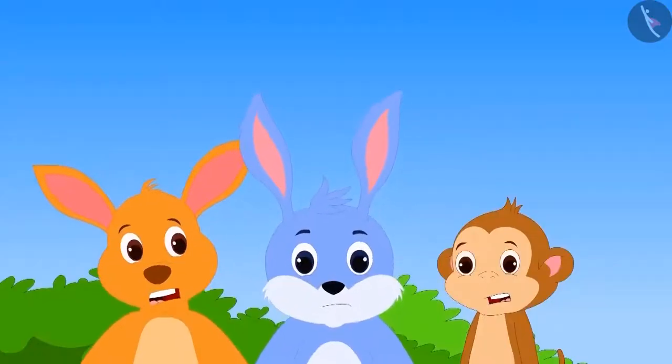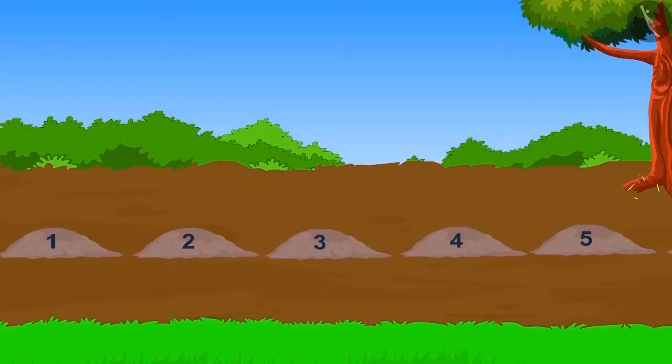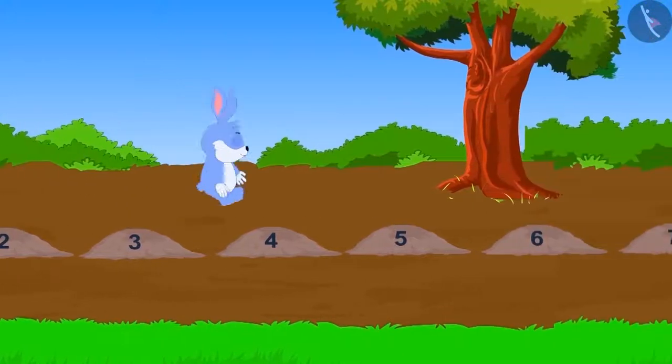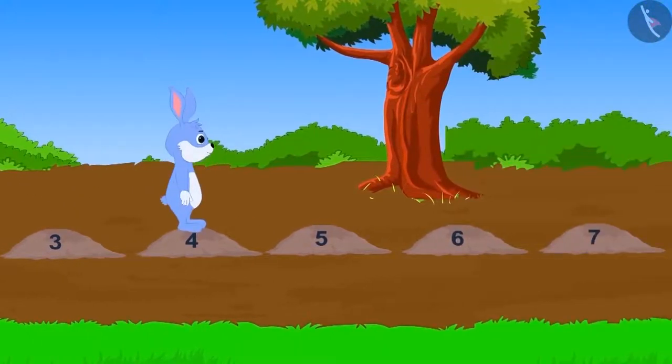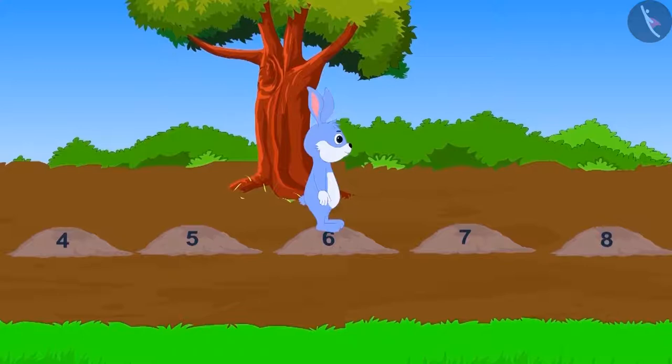First, bunny tried to cross the swamp. He jumped two steps in one jump and reached the second stone. Then he took another jump and reached which stone? On the fourth stone. In the third jump, bunny will reach on which stone two steps ahead? On sixth stone.